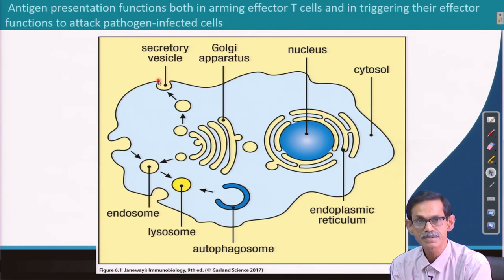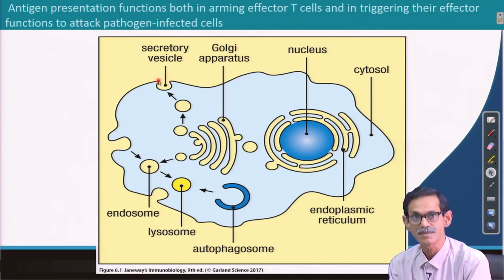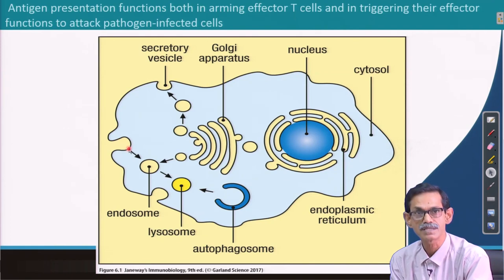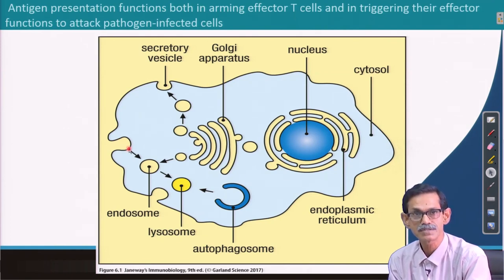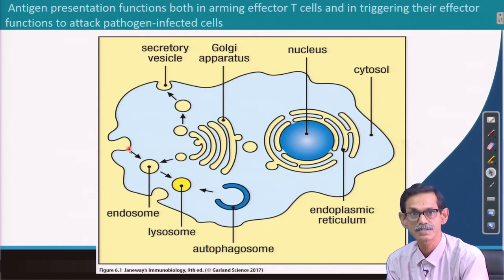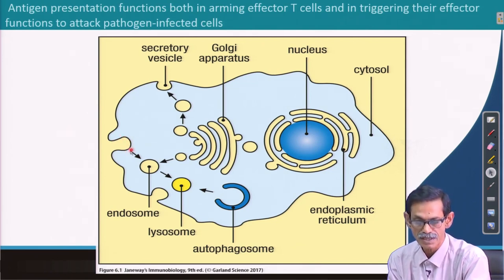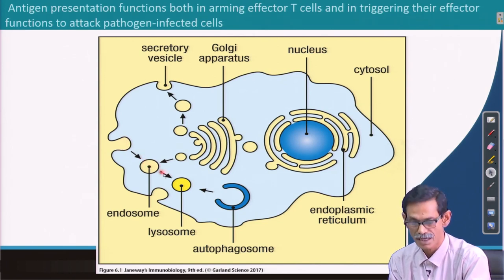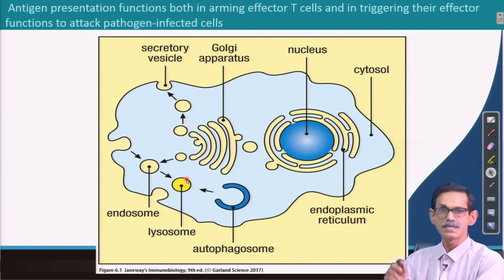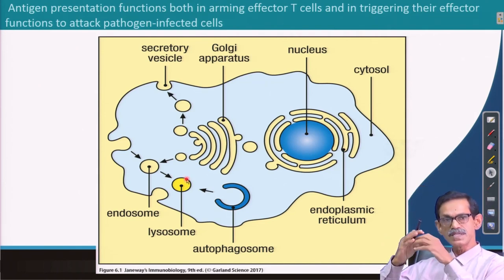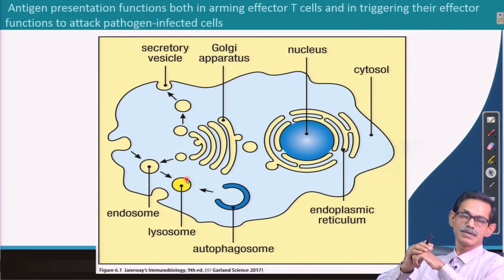If the cell wants to take something from outside, there are different mechanisms: pinocytosis and phagocytosis — though not all cells can do phagocytosis. What most cells do is receptor-mediated endocytosis: an invagination happens, forming a vesicle that comes inside the cell and gradually fuses with the lysosome, which then degrades the particle taken from outside.